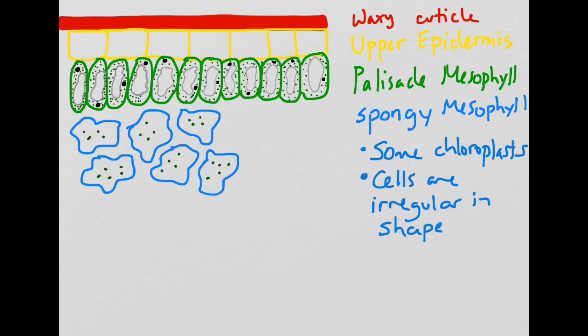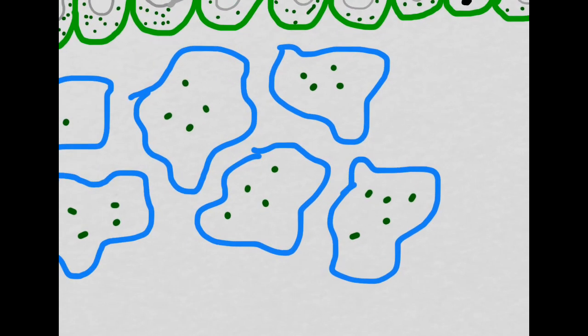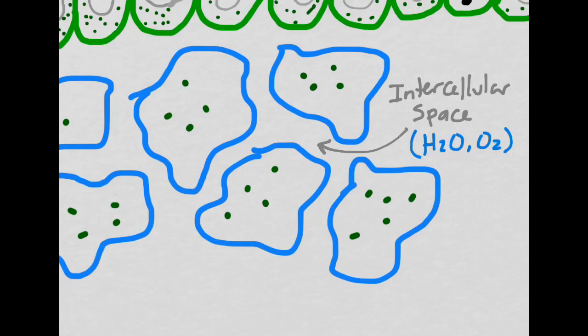The cells of the spongy mesophyll are a little bit more irregular in shape, but if we look a little bit more closely, we can see that they actually do contain some chloroplasts. This means that they can do some photosynthesis, but not as much as the palisade mesophyll. The cells of the spongy mesophyll are also spaced pretty far apart, and the area in between them is called the intercellular space. In this space is usually water and oxygen.